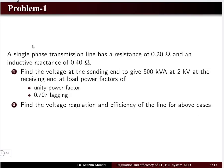The first question: a single phase transmission line has a resistance of 0.20 ohms and inductive reactance of 0.40 ohms. Determine the voltage at the sending end to give 500 kVA at 2 kV at the receiving end — case 1 at unity power factor, and case 2 at 0.707 lagging power factor. In the second part, determine the voltage regulation and efficiency of the line for both cases.